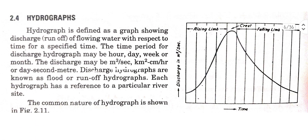Next topic is hydrograph. A hydrograph is defined as the graph showing the discharge or runoff of flowing water with respect to time for a specified period. The time period for a discharge hydrograph may be hours, days, weeks, or months. The discharge may be in cubic meters per second, or centimeters per hour per square kilometer. A discharge hydrograph is also known as a flood or runoff hydrograph. Each hydrograph refers to a particular river site.